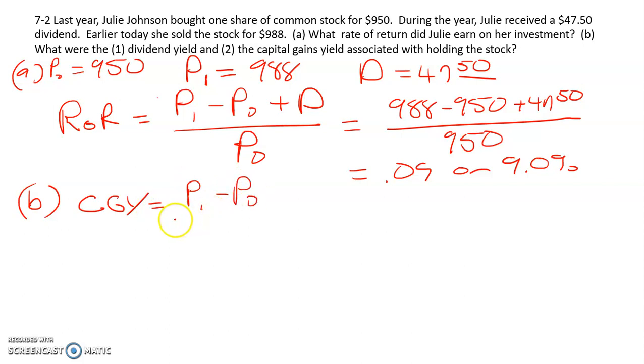So ending price minus the beginning price divided by the beginning price. So that's 988 minus 950 divided by 950, so that's 0.04 or 4%.